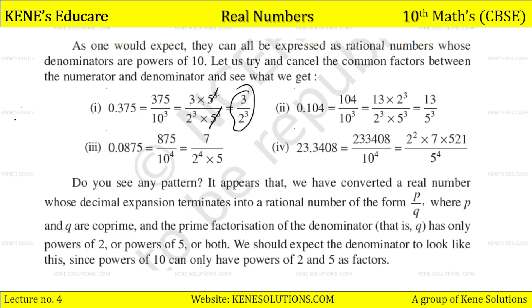Similarly, 104 upon 10 cubed equals 13 upon 5 cubed. Then 0.0875 = 875 upon 10 to the power 4, which simplifies to 7 upon 2 to the power 4 × 5. And 23.3408 = 23408 upon 10 to the power 4, whose prime factorization gives 2 squared × 7 × 521 upon 5 to the power 4. Do you see any pattern?